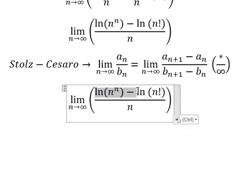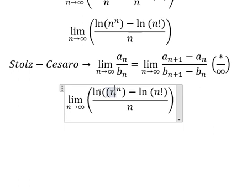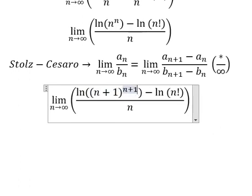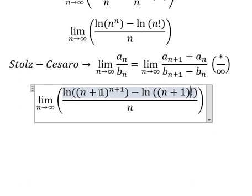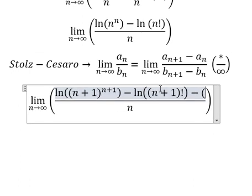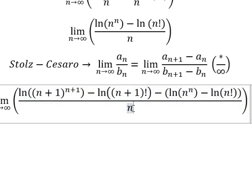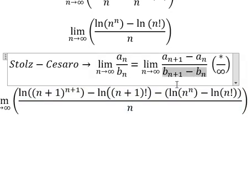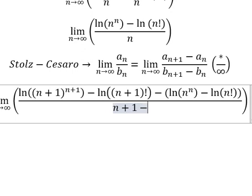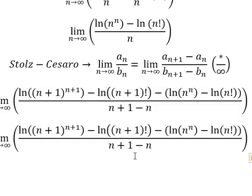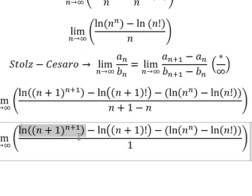In this expression, A_n is this term and B_n is this term. Now we need to transform B_{n+1} minus B_n, which should be (n+1) minus n, and that equals 1. So we can simplify like this.